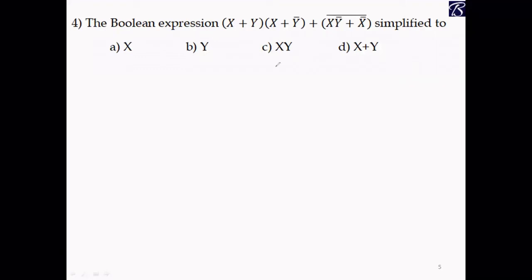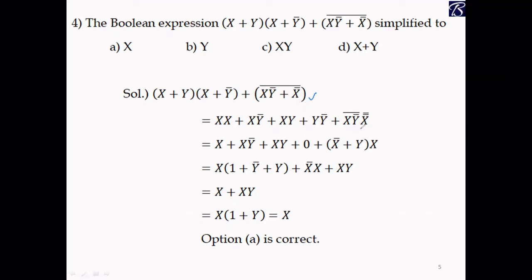Problem 4: A Boolean expression is given. De Morgan's law comes into picture — apply De Morgan's law for the last term to get (XȲ)̄ · X̄̄. Multiplying these two, we get an expression where X · X = X, and Y · Ȳ = 0 by the AND law, so that term becomes zero. Applying De Morgan's law again, X̄ + Ȳ̄ simplifies directly: X̄̄ = X.